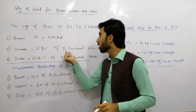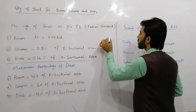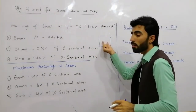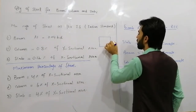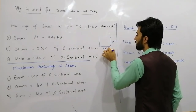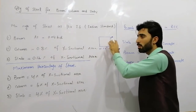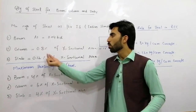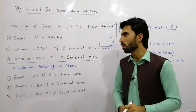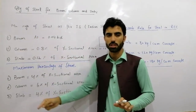For a column, the minimum percentage of steel is 0.8% of the cross-sectional area. Suppose the column size is 12 inch by 12 inch — first find the cross-sectional area of the column, then multiply it by 0.8%. This will give you the minimum quantity of steel for the column.